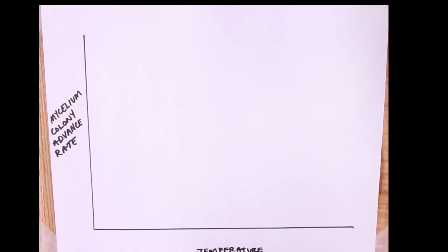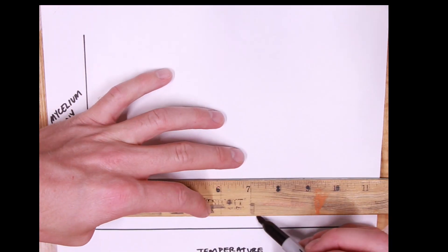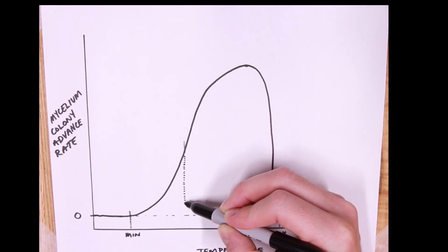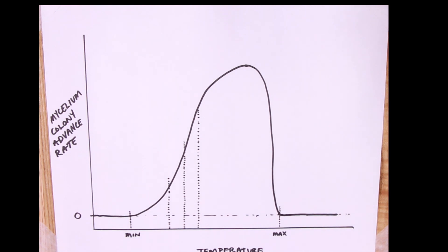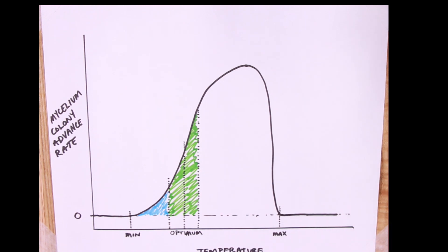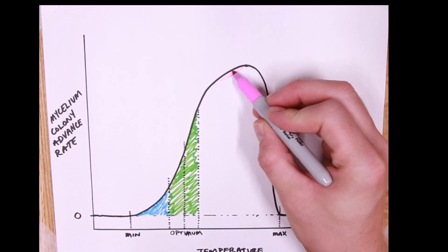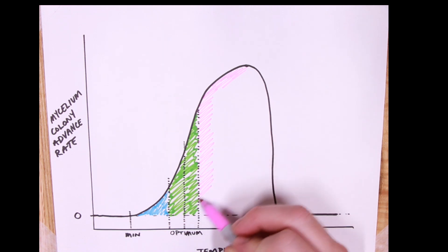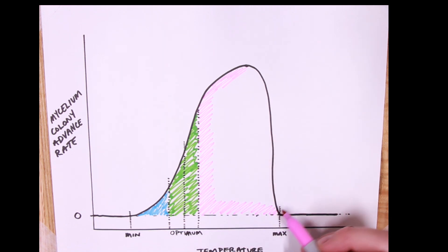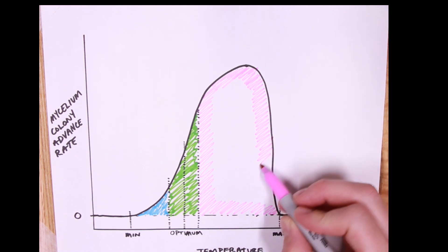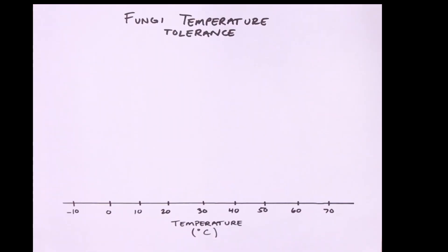Before we get too deep into that, let's define some terminology and look at a concept called mycelium colony advance rate, which is basically how fast a colony of mycelium is growing. The minimum and maximum temperatures are exactly what they say — below the minimum temperature, mycelium and therefore fungi will not grow, and above the max, same thing. But between the min and the max, mycelium and fungi can grow. However, there is the ideal growth temperature, which is right there in the middle.